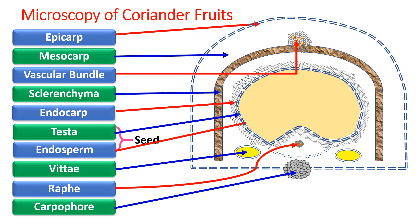Then comes the seed, which has a testa and typically an endosperm. The testa region is not as tough as in other fruits. If you take the section only from the apical region of the fruit, there are chances you may find the embryo within it, but most of the time sections are taken from the center zone because the tissue is quite differentiated and easily understood, so the embryo is not shown in the endosperm here.